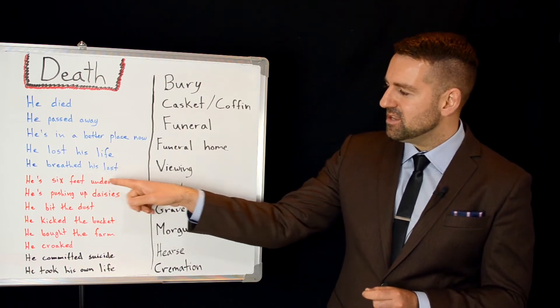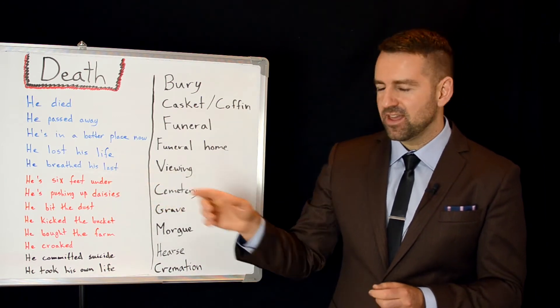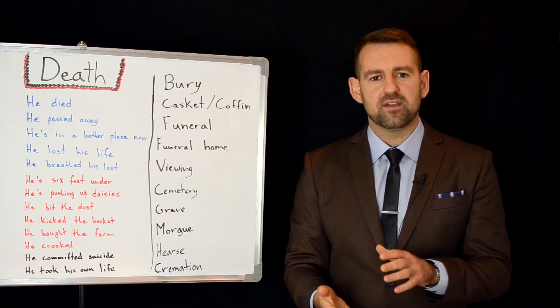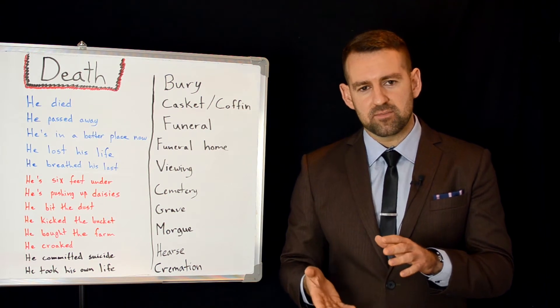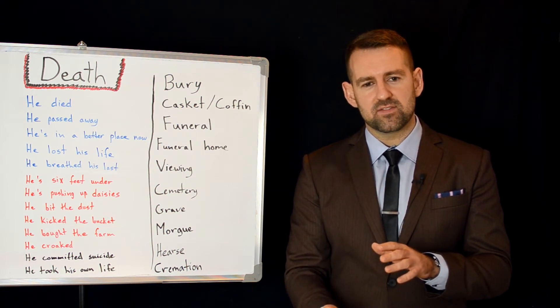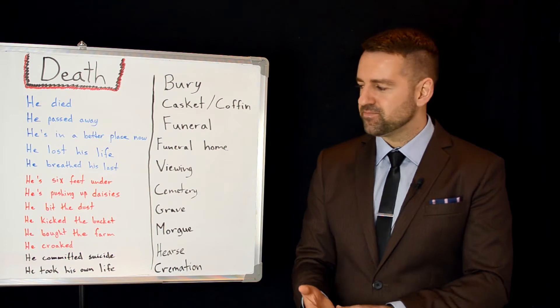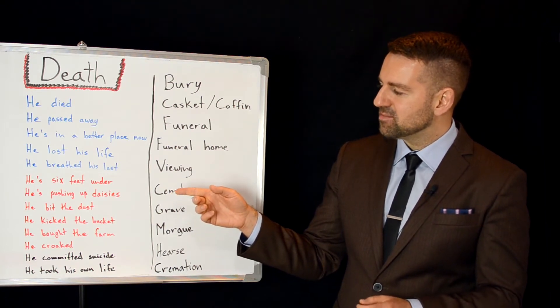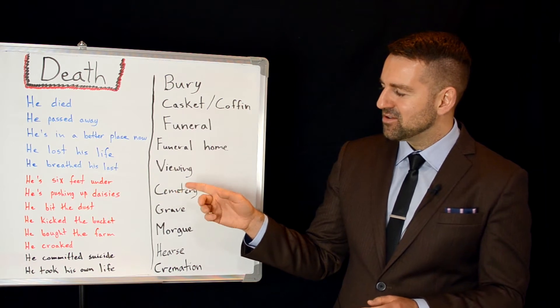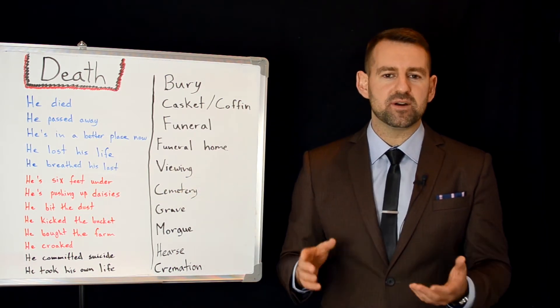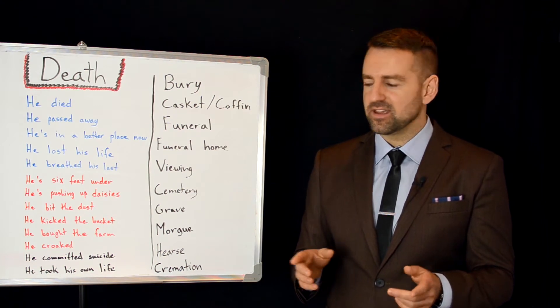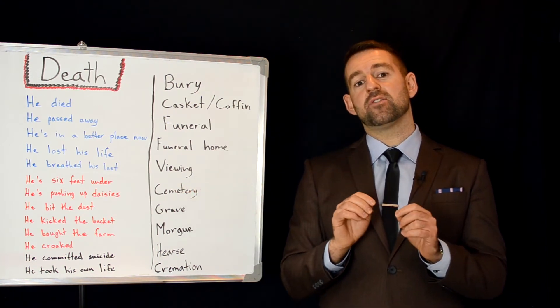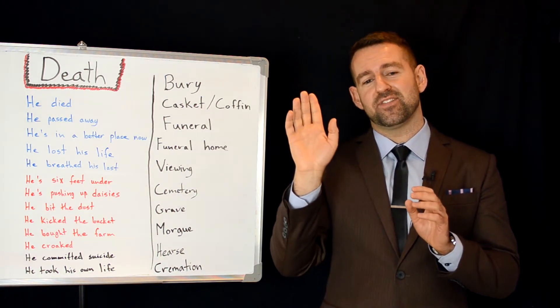So the first one, he's six feet under. That means that a person has died and has been buried. Usually when people get buried, they are six feet under the ground. Another one is, he's pushing up daisies. So daisies are a very common flower. And to be pushing up daisies means that you're under the ground and you're pushing up the flowers.